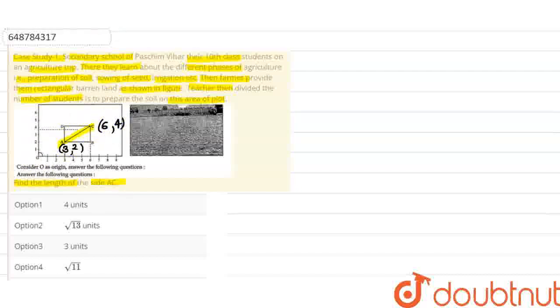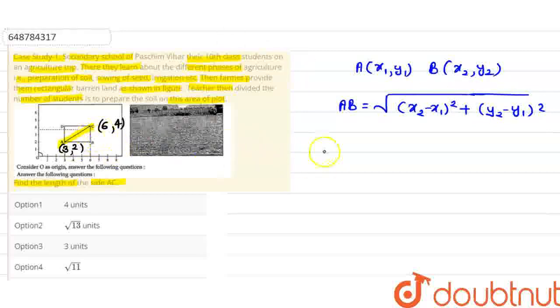Now basically, we need to find the length AC. So if we have two points, let's suppose one point A has coordinate (X1, Y1) and the other point B has coordinate (X2, Y2). Then the length AB equals the square root of (X2 minus X1) whole square plus (Y2 minus Y1) whole square. By using this concept, we find the length of AC.